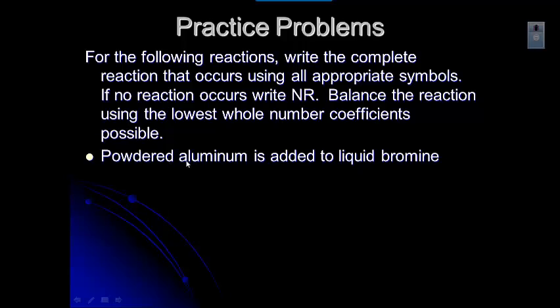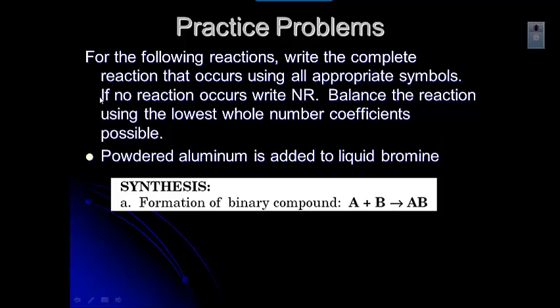Hopefully you saw that you've got aluminum, which is one element, and bromine, which is another element. If we add two individual elements together, that reaction is going to be a synthesis reaction. We're going to form a compound made of aluminum and bromine — a metal and a nonmetal, so that's an ionic compound. We need to take into account the charges, so let's go ahead and write the reaction.